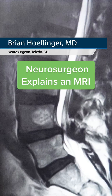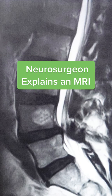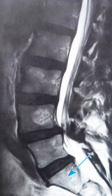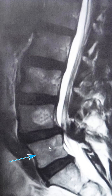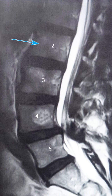This is an MRI of the lower back, and we're looking at it from a side view. Down here is the tailbone, and then there are five bones of the lumbar spine. This is the fifth lumbar vertebra, the fourth lumbar vertebra, third, second, and first bone.